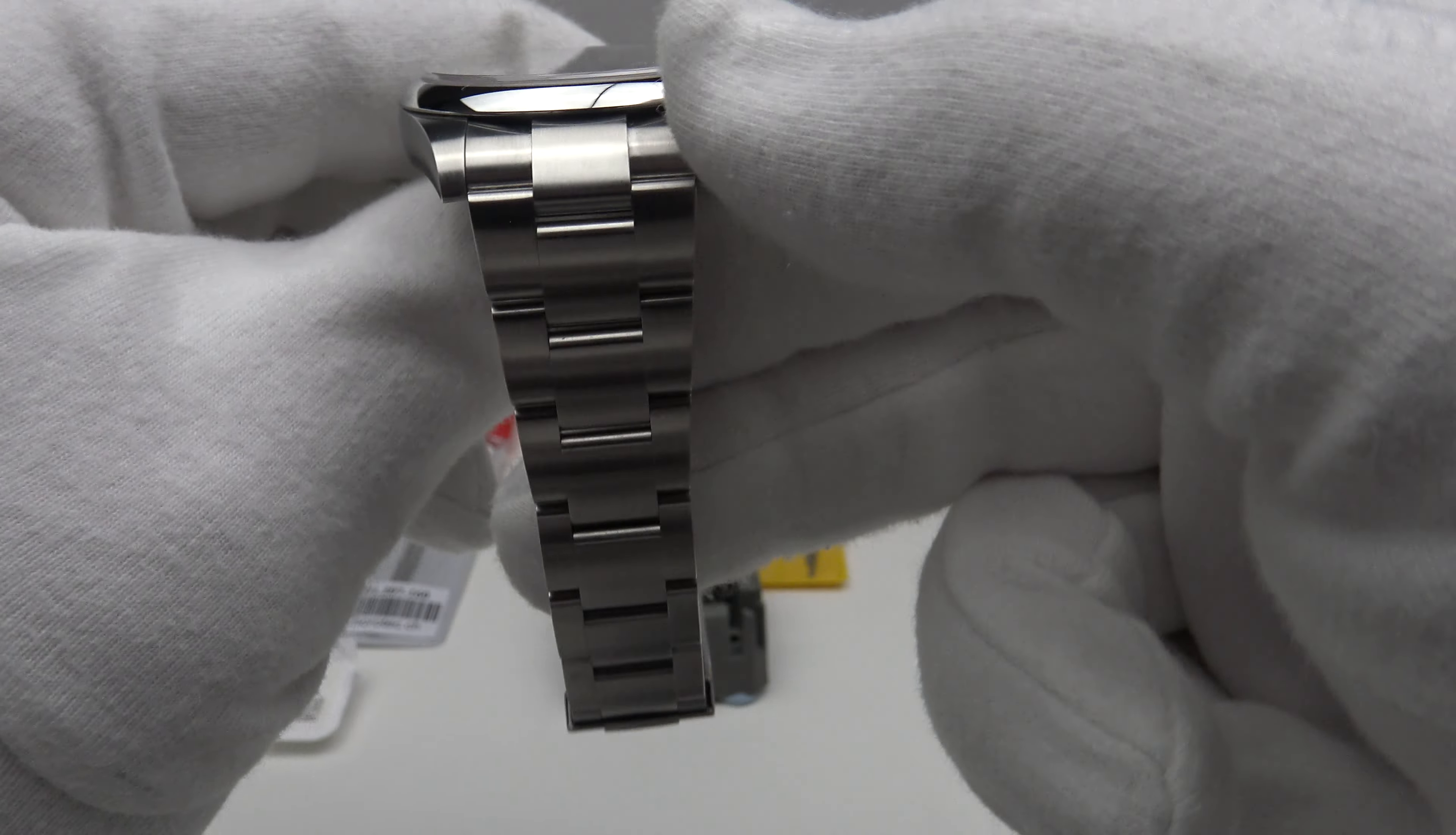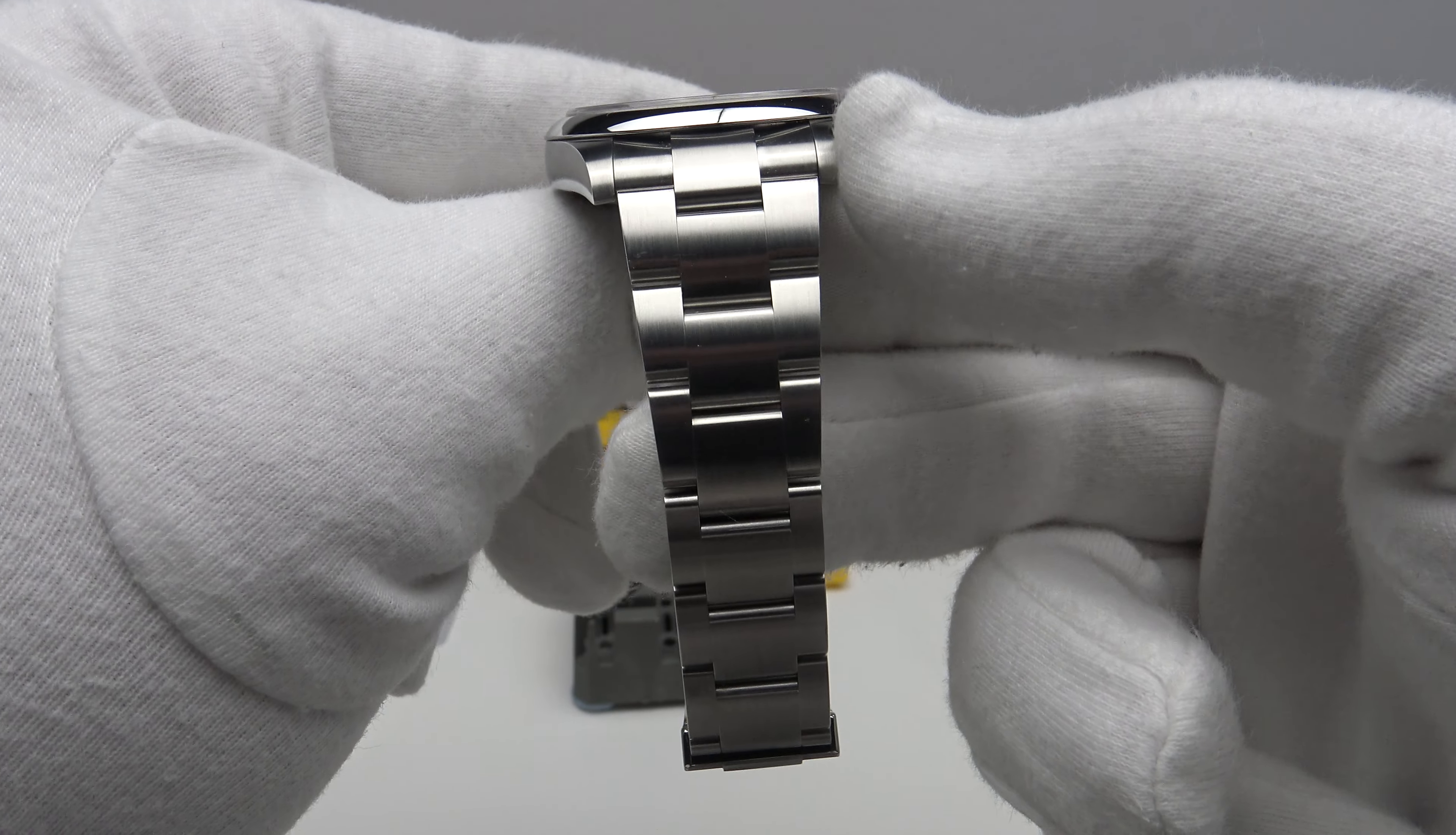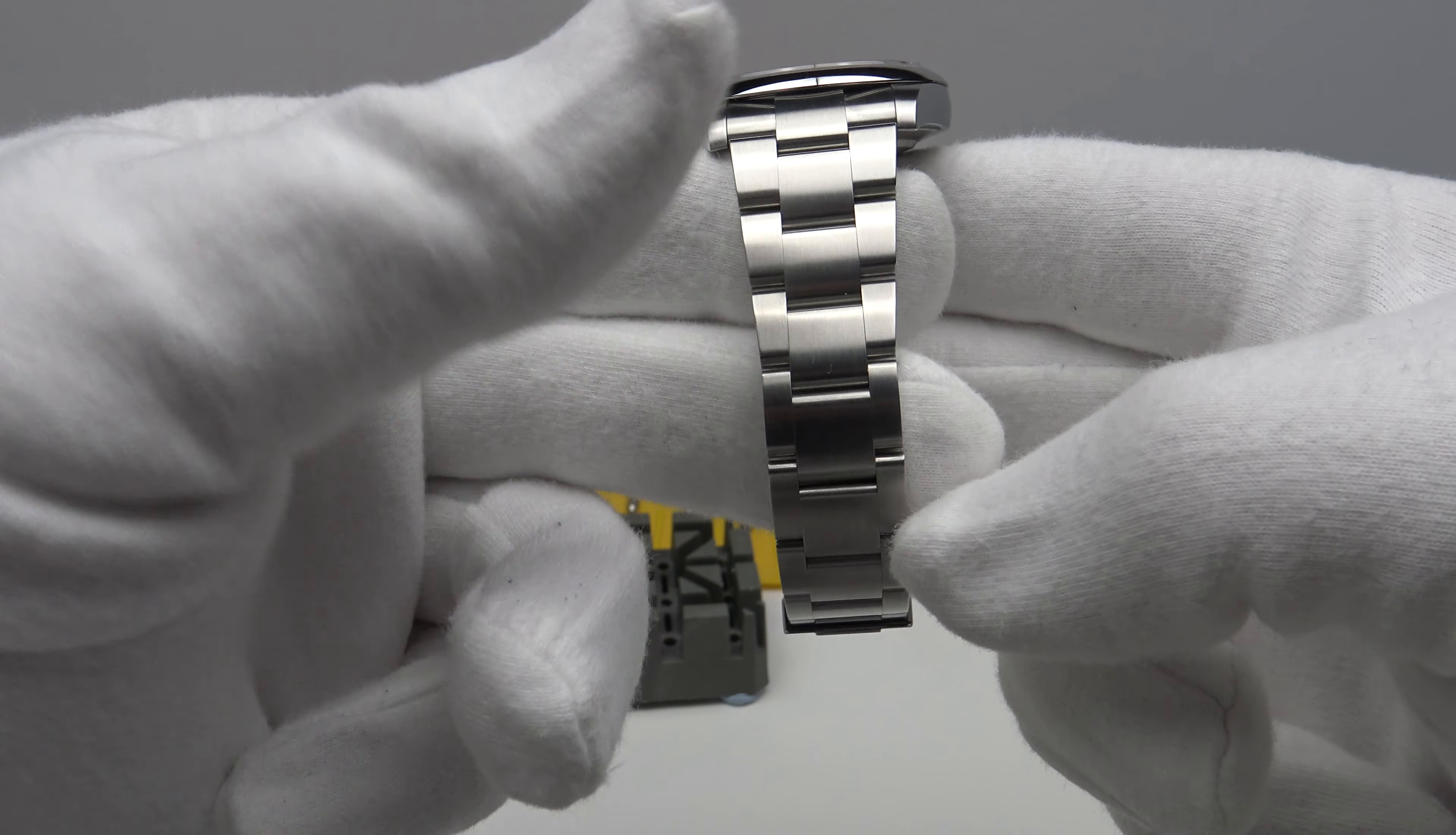Now, firstly, I'll just explain. The Oyster bracelet on the 41 comes with 12 full-size links. The correct orientation is on the six o'clock side of the head of the piece. There should be five full-size links. On the 12 o'clock side of the head of the piece, there should be seven full-size links.